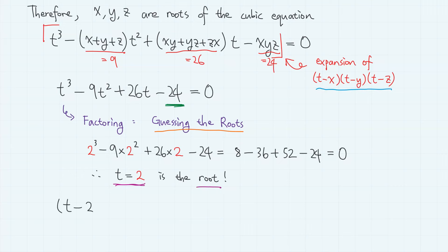So, we have t minus 2 as a factor. And if you carry out the division, you can obtain t squared minus 7t plus 12.